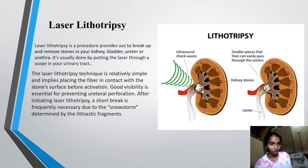Laser Lithotripsy. Laser lithotripsy is a procedure used to break up and remove stones in your kidney, bladder, ureter or urethra. It's usually done by putting the laser through a scope in your urinary tract. The laser lithotripsy technique is relatively simple and implies placing the fiber in contact with the stone surface before activation. Good visibility is essential for preventing ureteral perforation. After initiating laser lithotripsy, a short break is frequently necessary due to the snowstorm determined by the lithiastic fragments.